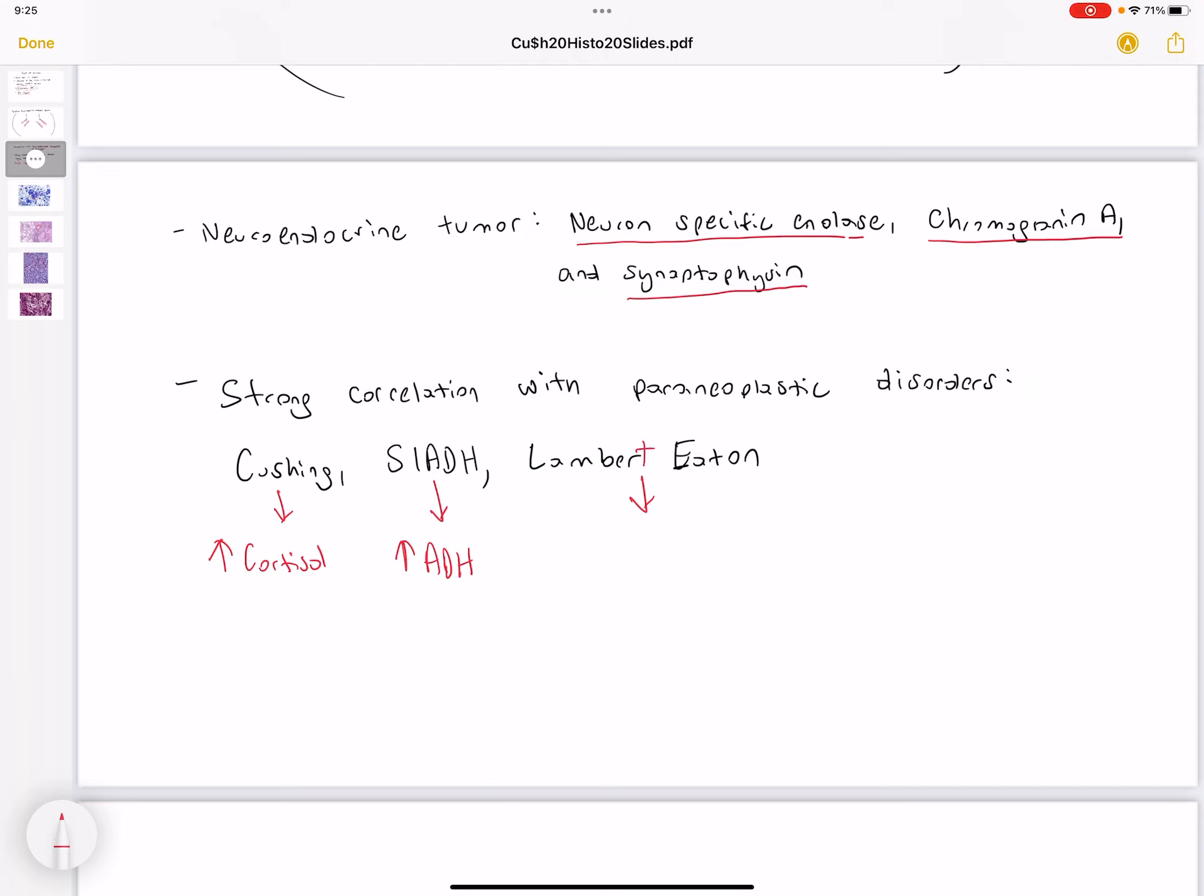Lambert-Eaton syndrome, what is going to happen is the body develops antibodies against the calcium channels. As a result, acetylcholine is not released. When acetylcholine is not released, it causes muscle weakness. This muscle weakness gets better throughout the day. Remember that small cell carcinoma is the lung cancer that has a strong correlation with paraneoplastic disorders.